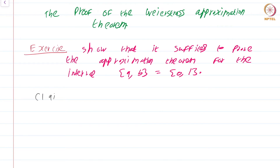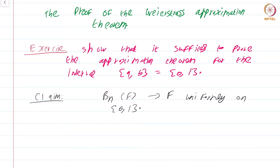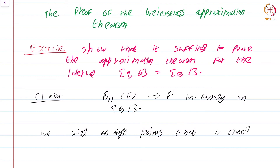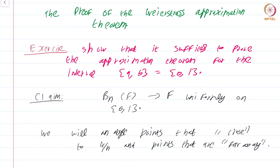The central claim is that these B_n(f) converge to f uniformly on the closed interval [0,1] — that is what we have to show. To do this, we are going to analyze points in two separate sets: points that are close to k/n and points that are far away. That is a somewhat vague remark, but that is what we are going to do. Let us begin the proof.